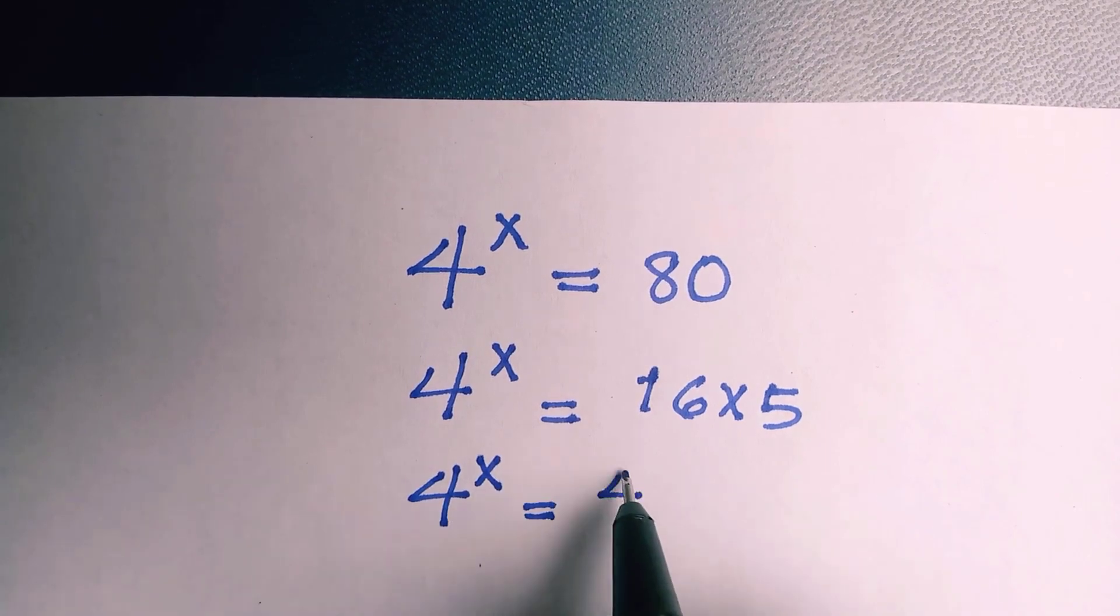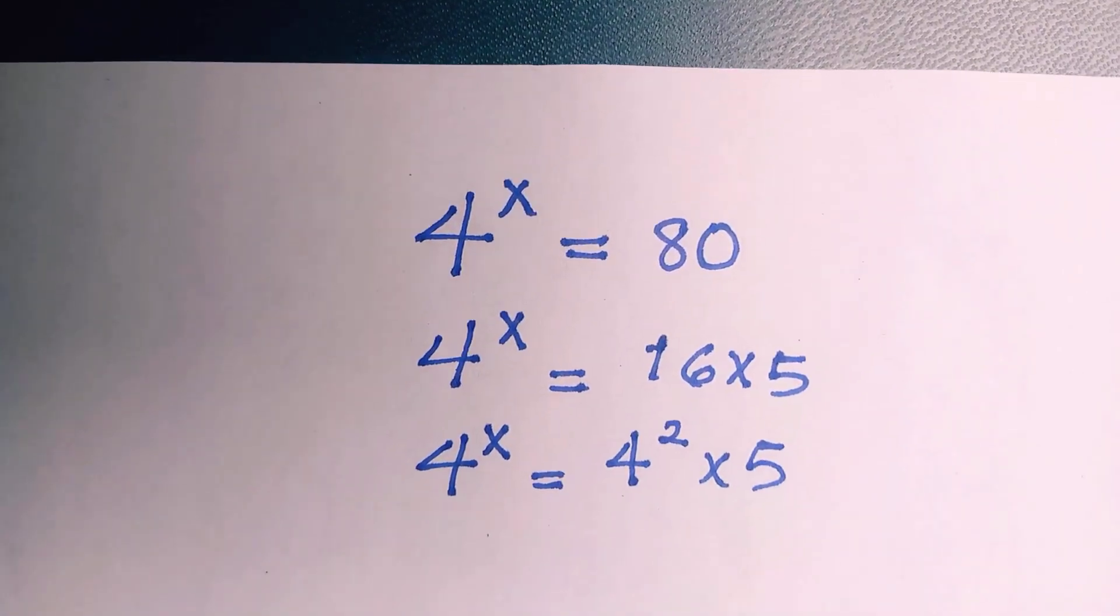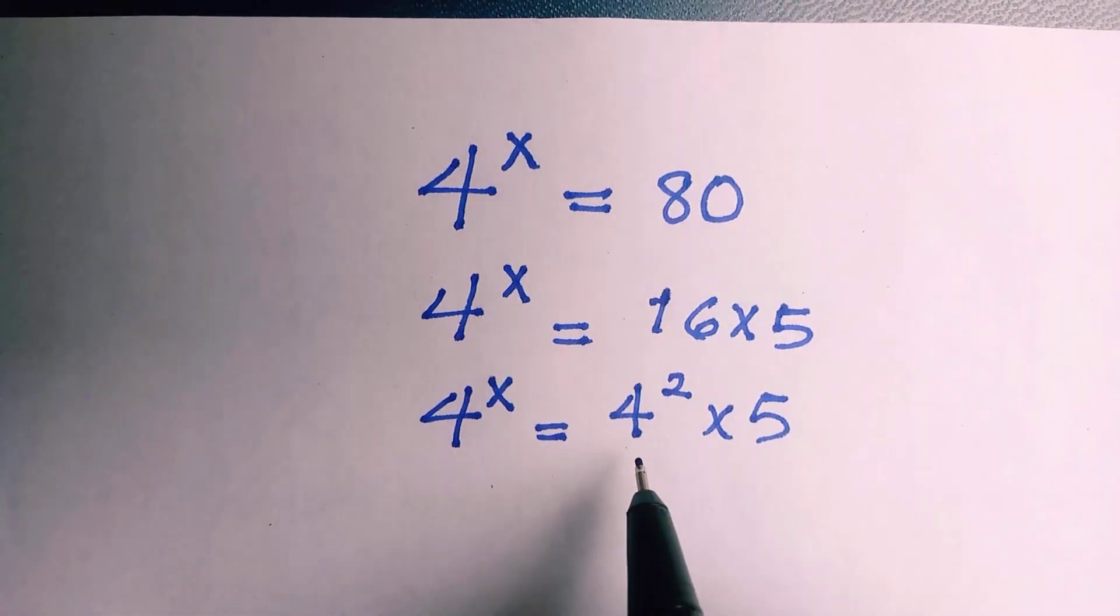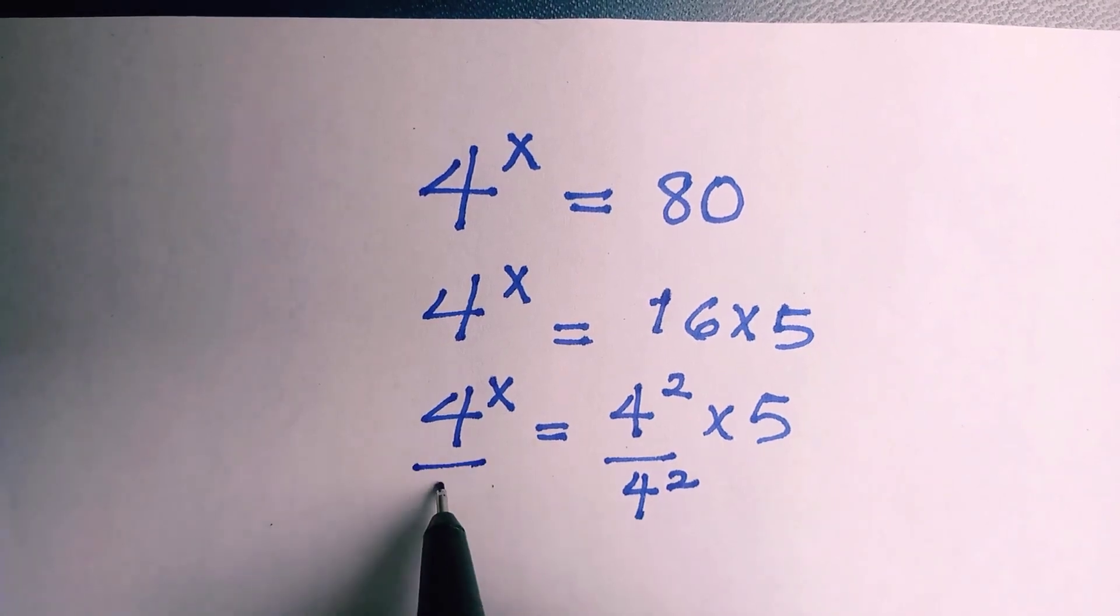So 4 squared times 5. And the next thing is I will divide both sides by 4 to the power 2. So divide by 4 to the power 2 at the two sides.